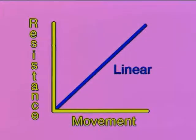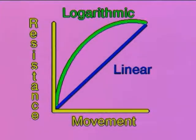Most potentiometers can be obtained with either linear or logarithmic tracks. A linear potentiometer has a resistive track that is uniform throughout its length — equal angular changes bring about equal changes of resistance. Whereas logarithmic tracks give large changes of resistance for a given movement at one end of the track, reducing to small changes at the other.